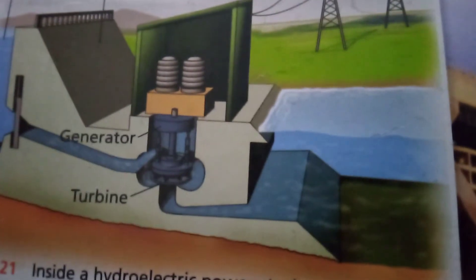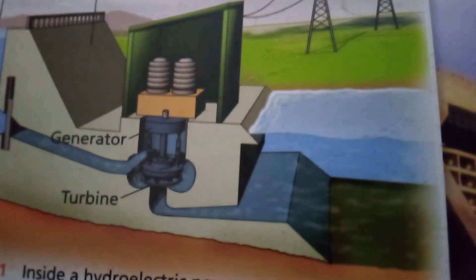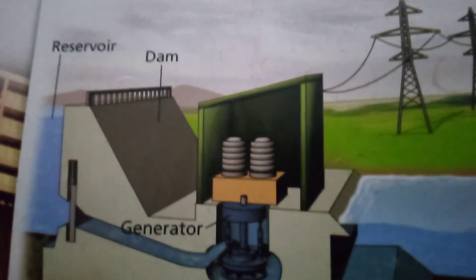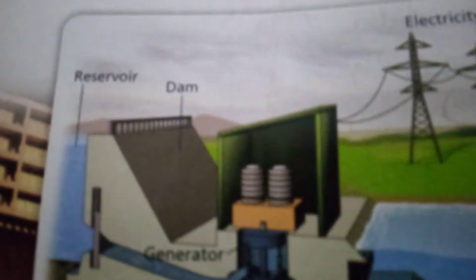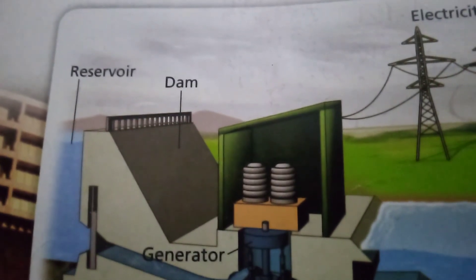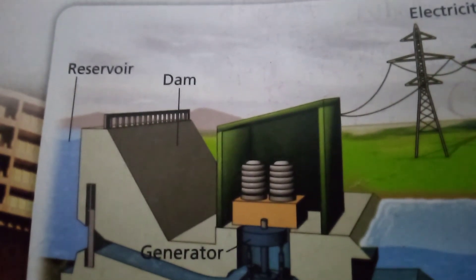You can see in this picture the inside of a hydroelectric power station — 'hydro' means water. This is the turbine that is turned through the pressure of water, and the turbines then turn on the generators to produce electricity.